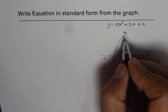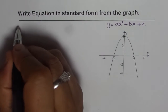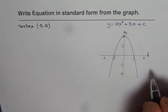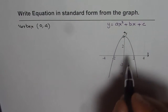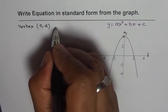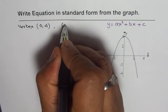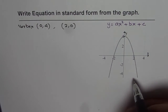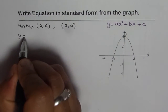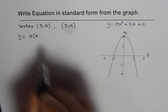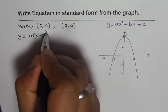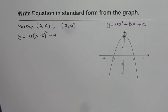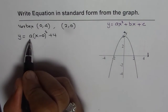When we write the equation in vertex form, we have to identify the vertex. Here it is very clear — the vertex is at X equals 0 and Y equals 4. We also need a point to get the value of A. The point we use is the x-intercept, which is (2, 0). So in vertex form, the equation is Y equals A times (X minus 0) squared plus 4.